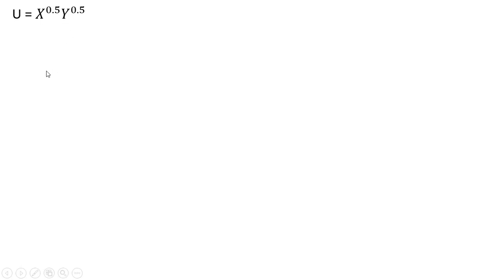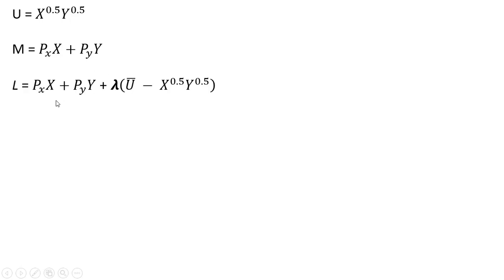We've got good x and good y. Here is our consumer's income m. Price of good x times good x plus price of good y times y — that's the budget constraint. We're going to set up the Lagrangian here where we're going to minimize expenditures subject to the constraint, so the utility function will be our constraint.